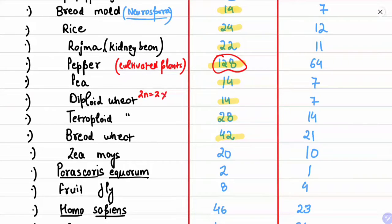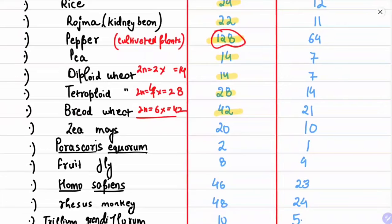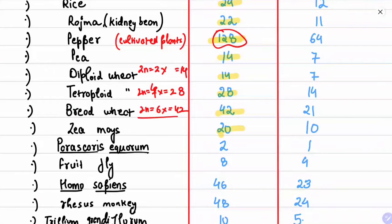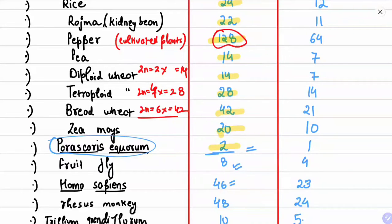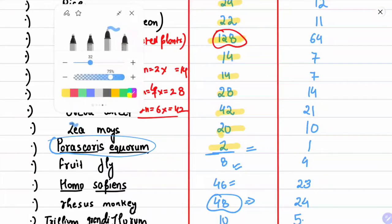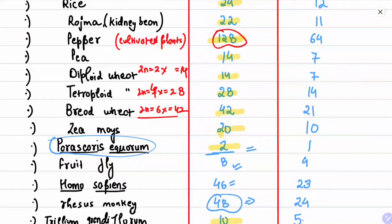Pea has 14. Diploid wheat: 2n = 2x = 14. Tetraploid wheat: 2n = 4x = 28. Bread wheat: 2n = 6x = 42. Zea mays has 20. Parascaris equorum has 2 — the lowest chromosome number in any organism. Fruit fly has 8, Homo sapiens 46, rhesus monkey 48, and Trillium has 10.